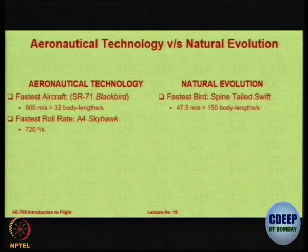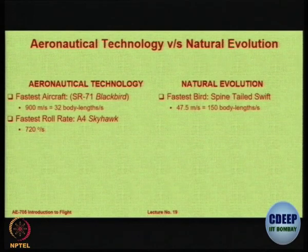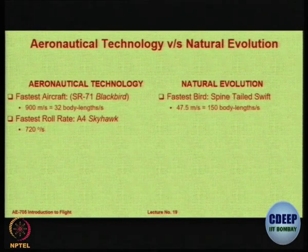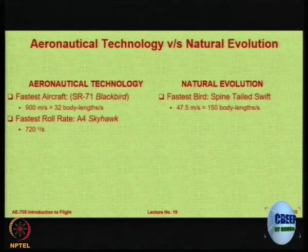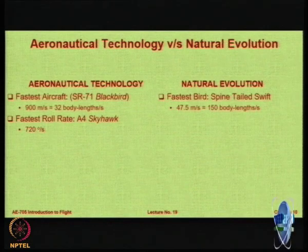Roll rate is another measurement of how efficient an aircraft is. The fastest roll rate recorded is for the A-4 Skyhawk aircraft, which is 720 degrees per second — in one second it can complete two full rotations. The fastest roll rate in nature is in a barn swallow, which can go at 5000 degrees per second. The rate at which a bird can turn is far more than the rate at which an aircraft can turn.